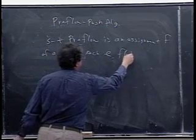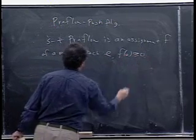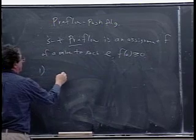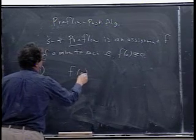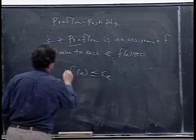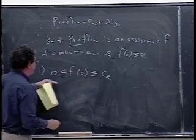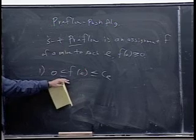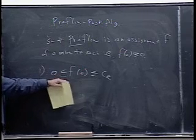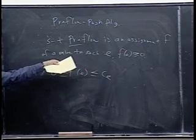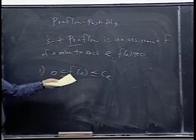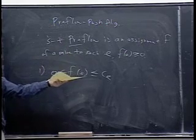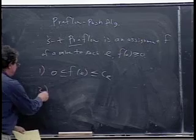So FE greater than or equal to zero. And in fact, FE is going to be less than or equal to CE. This is the same capacity constraint that we had for a flow. So that doesn't change. We're still talking about an assignment of non-negative values to each edge, and this is the same constraint we had before.